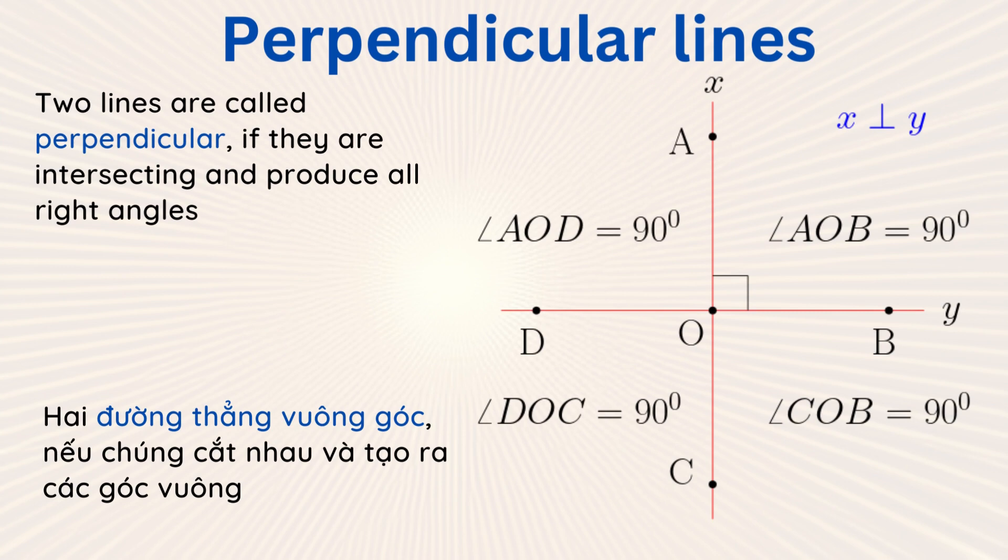Two lines are called perpendicular if they are intersecting and produce all right angles. The picture shows two lines, X and Y, intersecting at the point of intersection O.